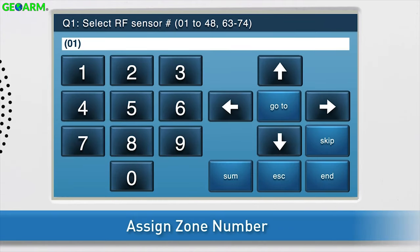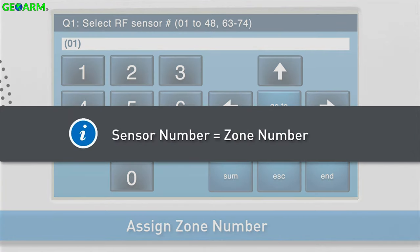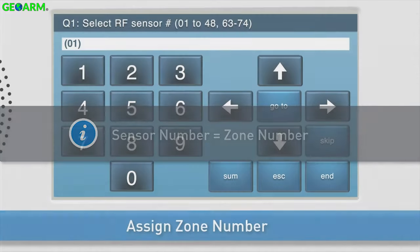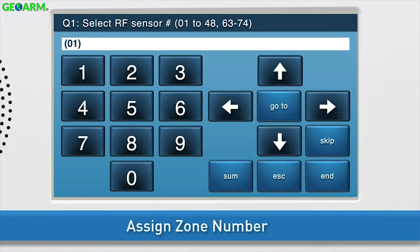First, you will decide which zone number to assign to the wireless carbon monoxide detector. Note, the words sensor and zone are interchangeable. In this training, we'll use the term zone number. By default, we're already on the correct sub-question to select the zone number. The white field is called the answer box. 01 will display in the answer box by default,